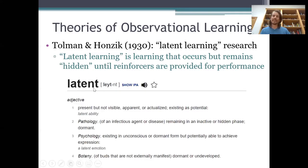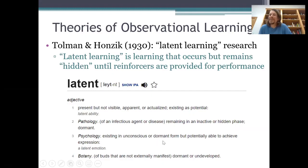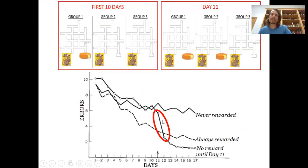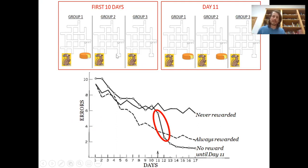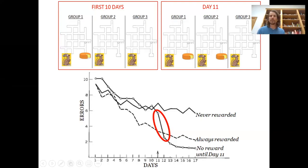The word latent basically means hidden — present but not visible, remaining in an inactive or hidden phase, existing in dormant form. So those rats in the Tolman and Honzik study — the second group — were learning about the maze, their behavioral potential was changing, but for the first 10 days that learning was hidden, it was latent, not apparent in their performance. They had to be motivated with food to demonstrate that learning.